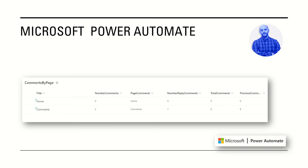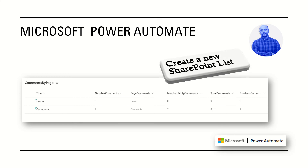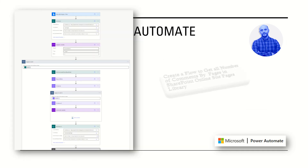This is our SharePoint list. You can see here the title, the number of comments, the page where the comment was made, the number of reply comments — a reply being a reply to a parent comment. For example, the comments page has two comments and seven reply comments, so the total is nine.